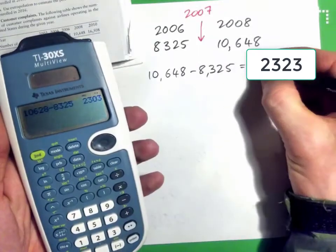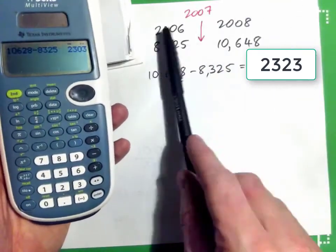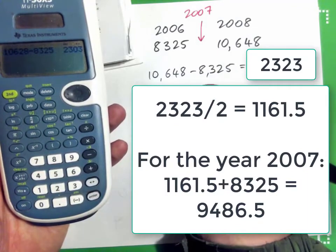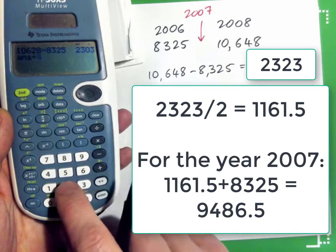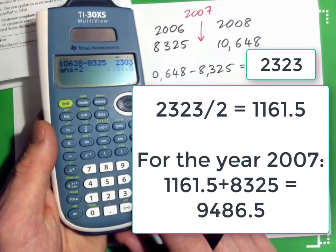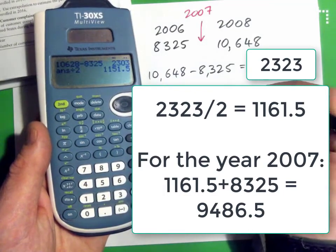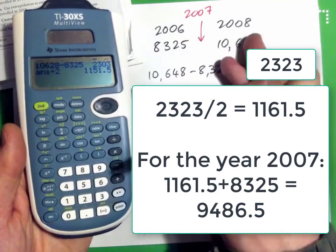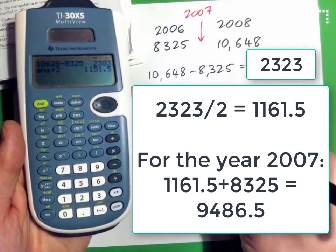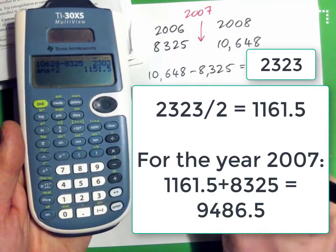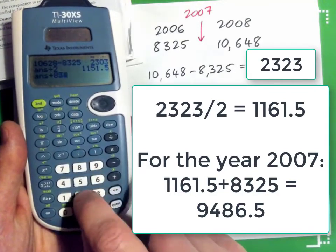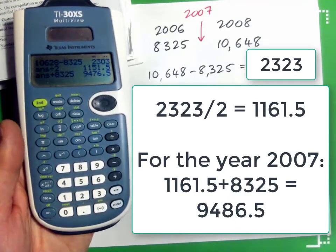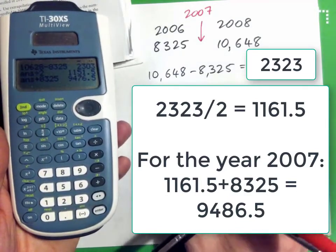That gives 2,303. That was over a two-year period because it's two years between 2006 and 2008, so you go 2,303 divided by 2, and you get 1,151.5. So halfway towards 2008 is this amount of change. You take this number and add on 8,325, and you get 9,476.5.